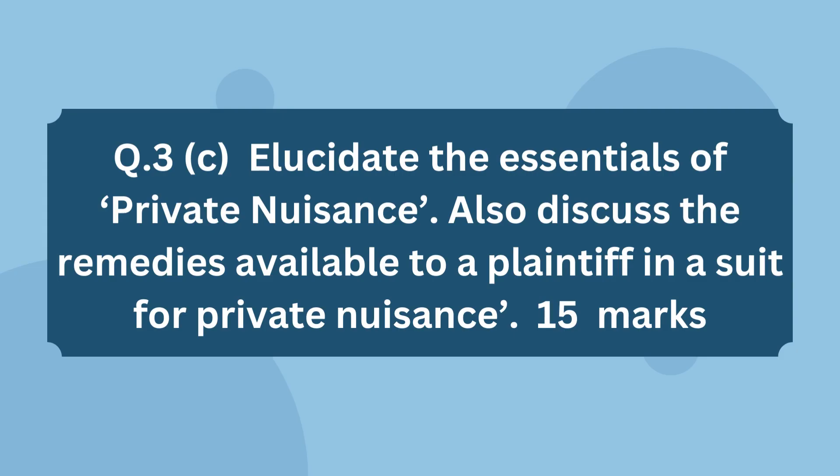The last part of Question 3 asks you to elucidate the essentials of private nuisance and discuss the remedies available to a plaintiff in a suit for private nuisance. Start by explaining what private nuisance is — you can also distinguish it from public nuisance in just one line. Then give its essentials, such as unlawful interference with the enjoyment of land and damages. Lastly, list out the different remedies available under various provisions like the Specific Relief Act, CPC, and others.